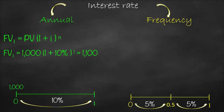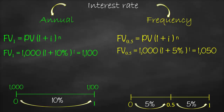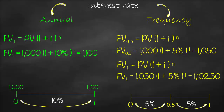What if we use a semi-annual frequency? The future value for the first half-year equals 1,000 × (1 + 5%)^1, using power 1 because this is the first period of six months, giving us $1,050. Then the future value at the end of year one equals 1,050 × (1 + 5%)^1 — another six-month period — which gives us $1,102.50.